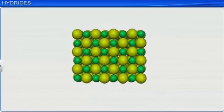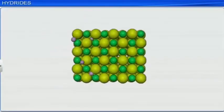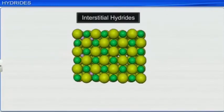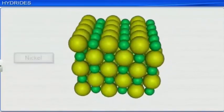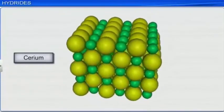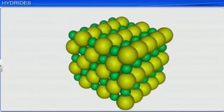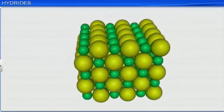Earlier, it was thought that hydrogen, being very small in size, occupied interstices in the metal lattice in these hydrides. And hence, they were named interstitial hydrides. However, recent studies have shown that except for the hydrides of nickel, palladium, cerium, and actinium, the other hydrides of this type have lattices different from the parent metal.